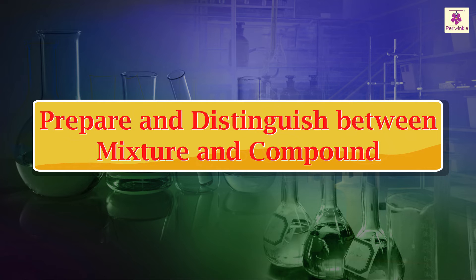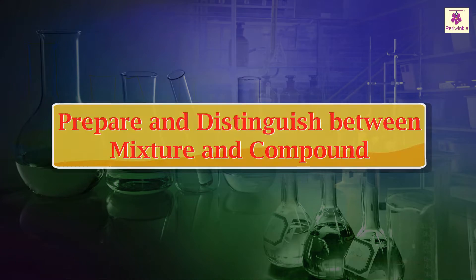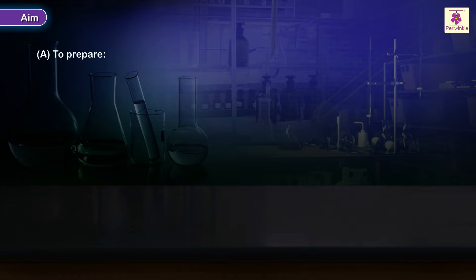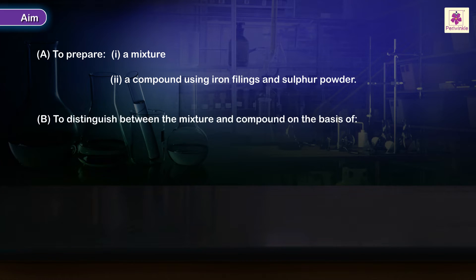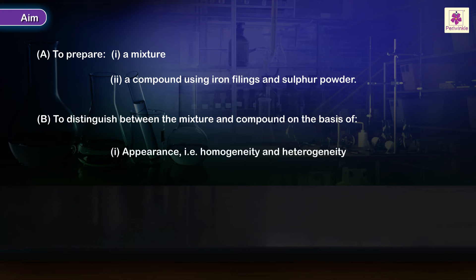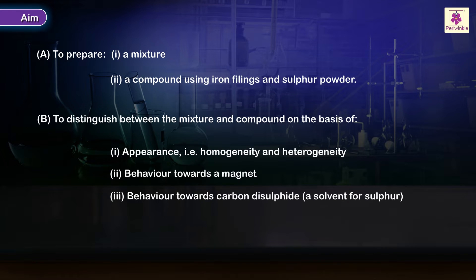Aim: to prepare and distinguish between a mixture and a compound. Aim one: prepare a mixture and a compound using iron filings and sulfur powder. Aim two: distinguish between the mixture and compound on the basis of appearance (homogeneity and heterogeneity), behavior towards a magnet, behavior towards carbon disulfide (a solvent for sulfur), and effects of heat.